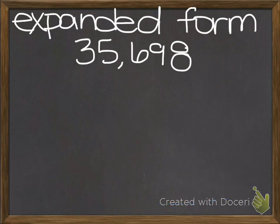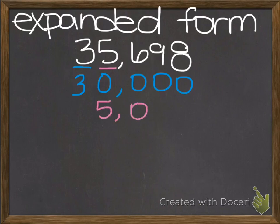Let's also try to put this into expanded form. Expanded form is how we show the value of each digit in the number. For instance, let's look at this three. The value of the three is not three. It is actually worth thirty thousand. Now, let's look at the five. It is worth five thousand because it's in the one thousands place. Next, let's take a look at the six. It's worth six hundred because it's in the hundreds place.